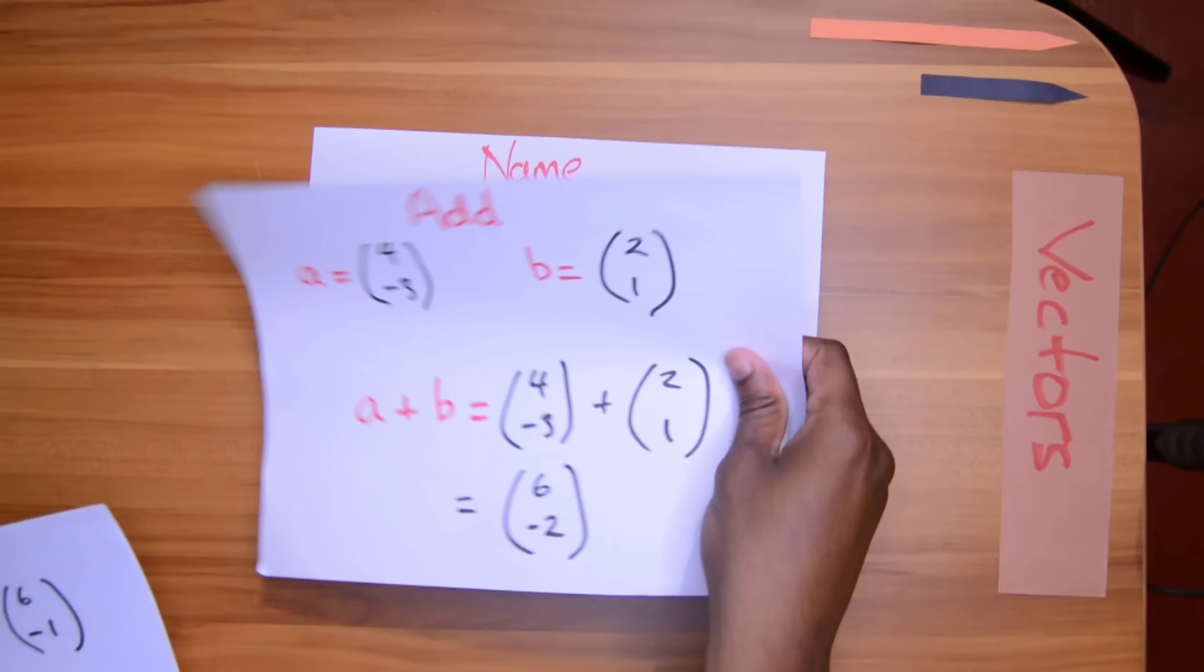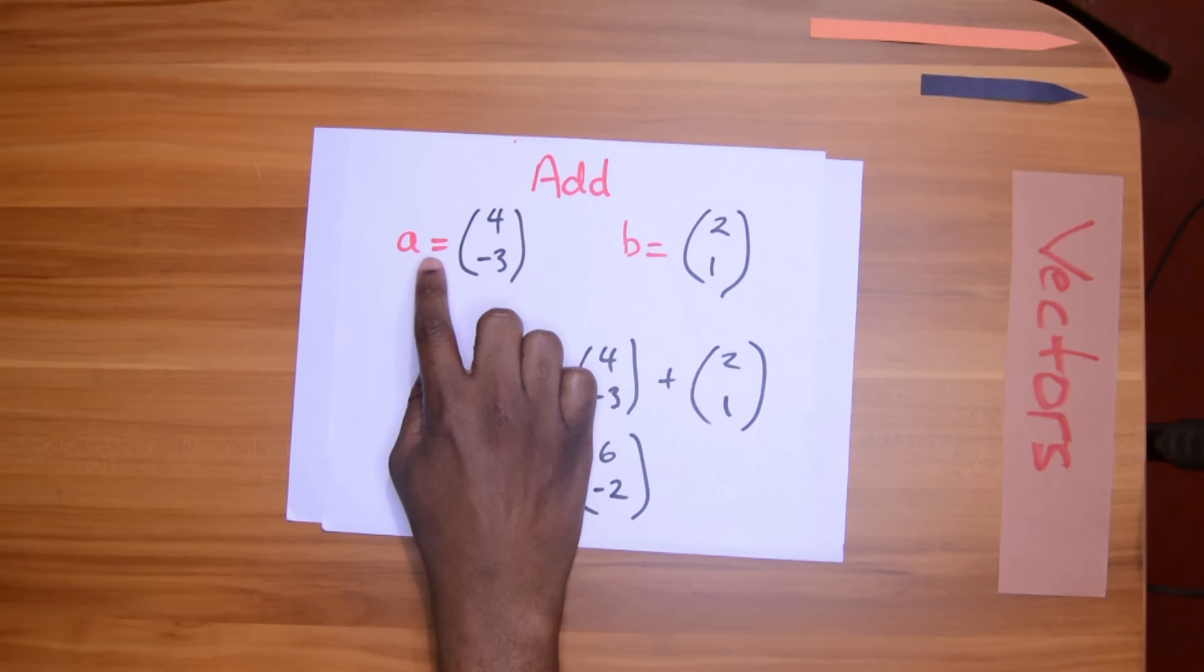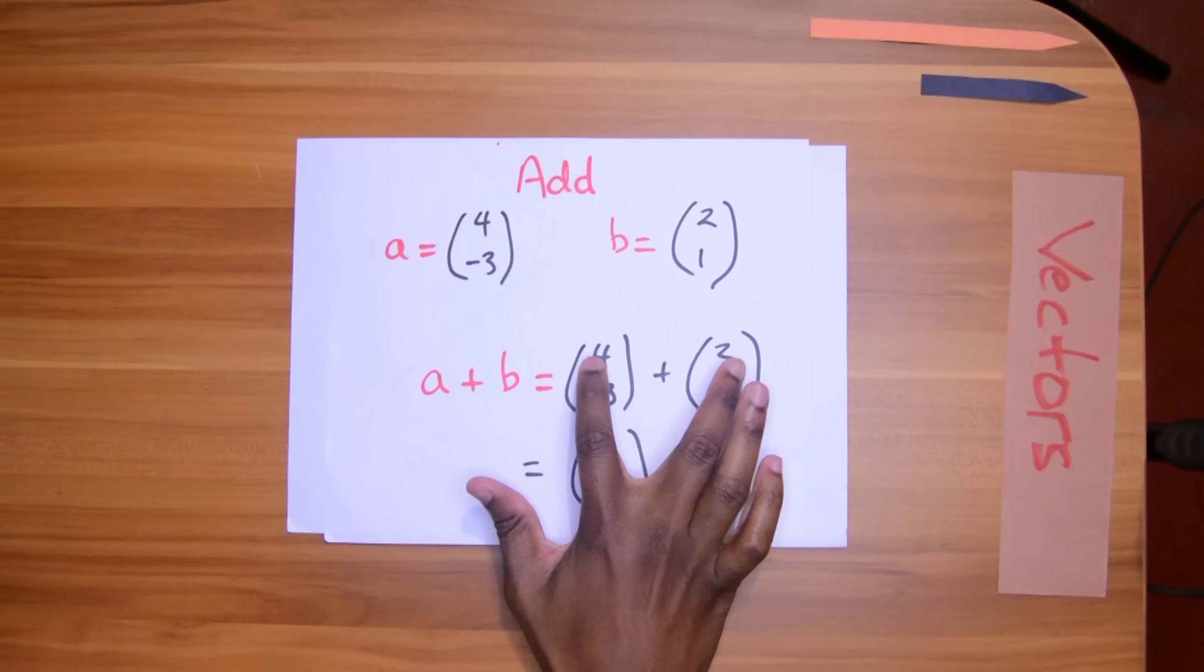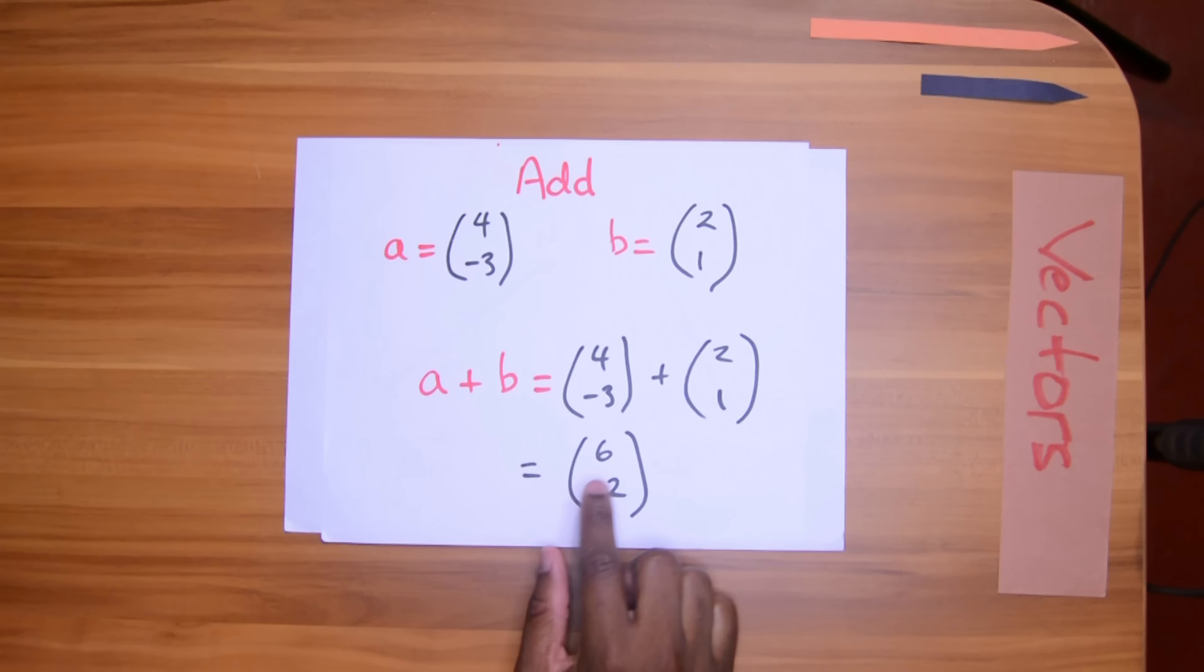We can add them if we have a vector A and we set it to be (4, -3). And vector B is (2, 1). Adding A and B together, we'll add the X terms, then the Y terms, and arrive at an answer. So this is the answer for A plus B.